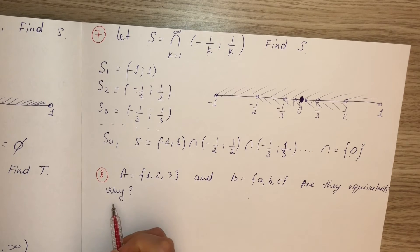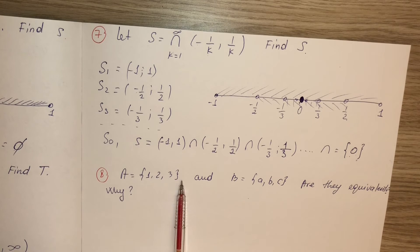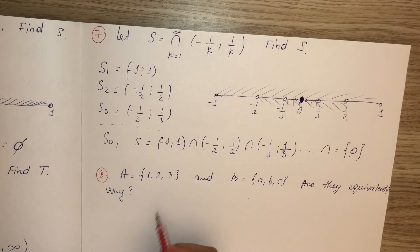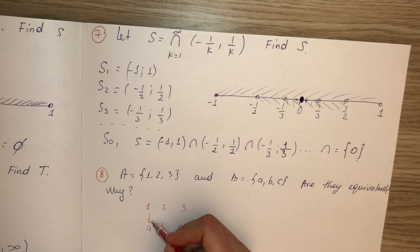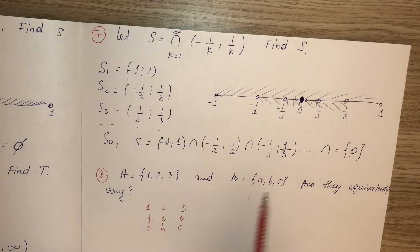Our next exercise is about one-to-one correspondence of two sets. Assume set A = {1, 2, 3} and set B = {a, b, c}. Are these two sets equivalent? Yes — we can make a one-to-one correspondence between the elements of these sets, and that is the reason they are equivalent.